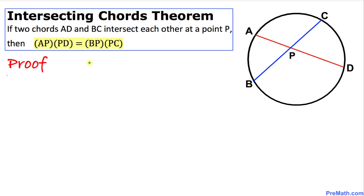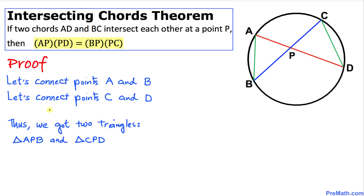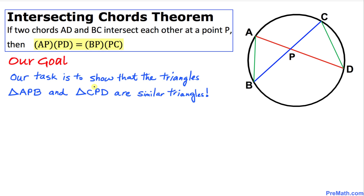Let's go ahead and get started with our proof. First, let's connect points A and B, and we are going to connect points C and D as well. Here is our much nicer looking diagram, and as you can see we have two triangles: one is triangle APB and the other one is triangle CPD.